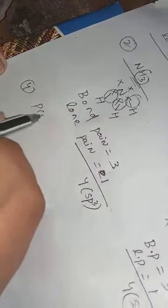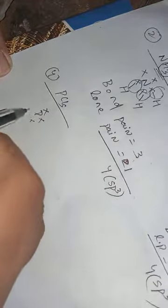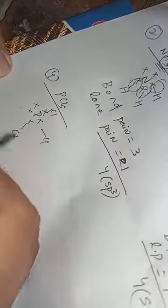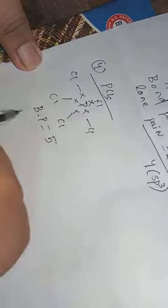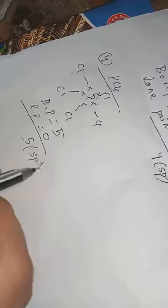Now we will take another example, PCL5. In PCL5 the outermost orbit of phosphorus contains 5 electrons. Here 5 chlorines bonded with 5 electrons of phosphorus. So bond pair is 5 and there is no lone pair present. In PCL5 their sum is 5, so the hybridization is SP3D.